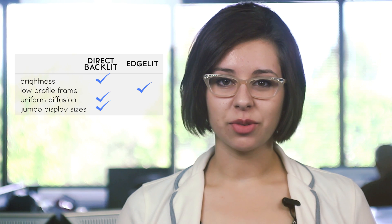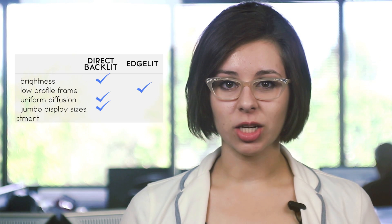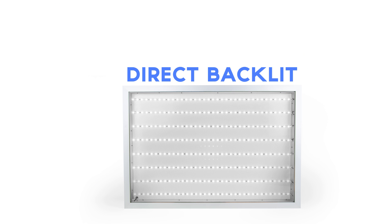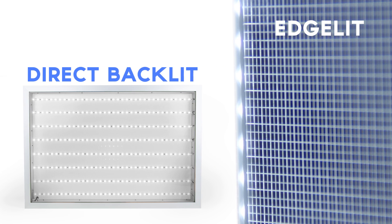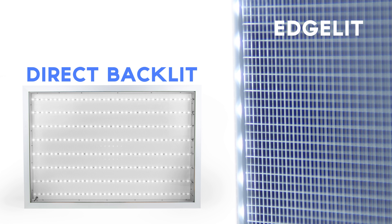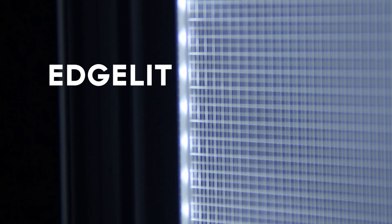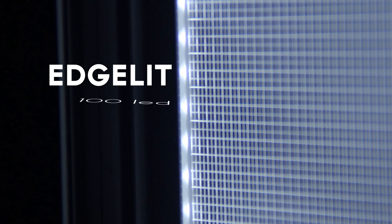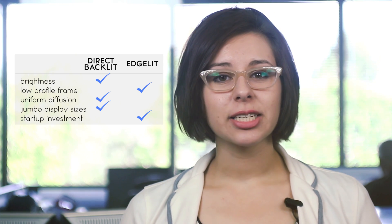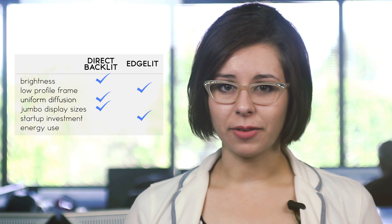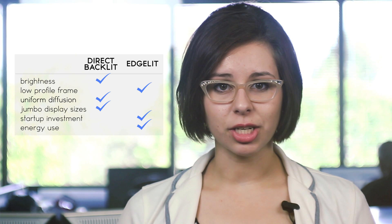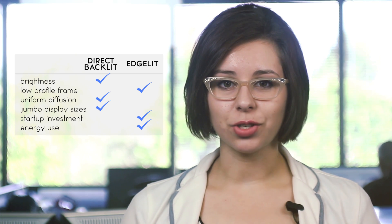The final consideration between direct backlit and edge-lit light boxes is your investment. A direct backlit light box needs many more lamps to light up the display face than an edge-lit one if it's using LED lamps. For example, a medium-sized direct backlit light box may contain approximately 800 LED lamps while a similar edge-lit light box may contain only about 100 lamps. This means there will be higher startup and operating investments for the direct backlit option, unless you choose to use fluorescent lamps.